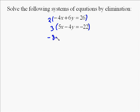We multiply the entire top by 2. So we get negative 8x plus a positive 12y equals a positive 52. We multiplied all that by 2. Now the bottom, we're going to multiply by 3.